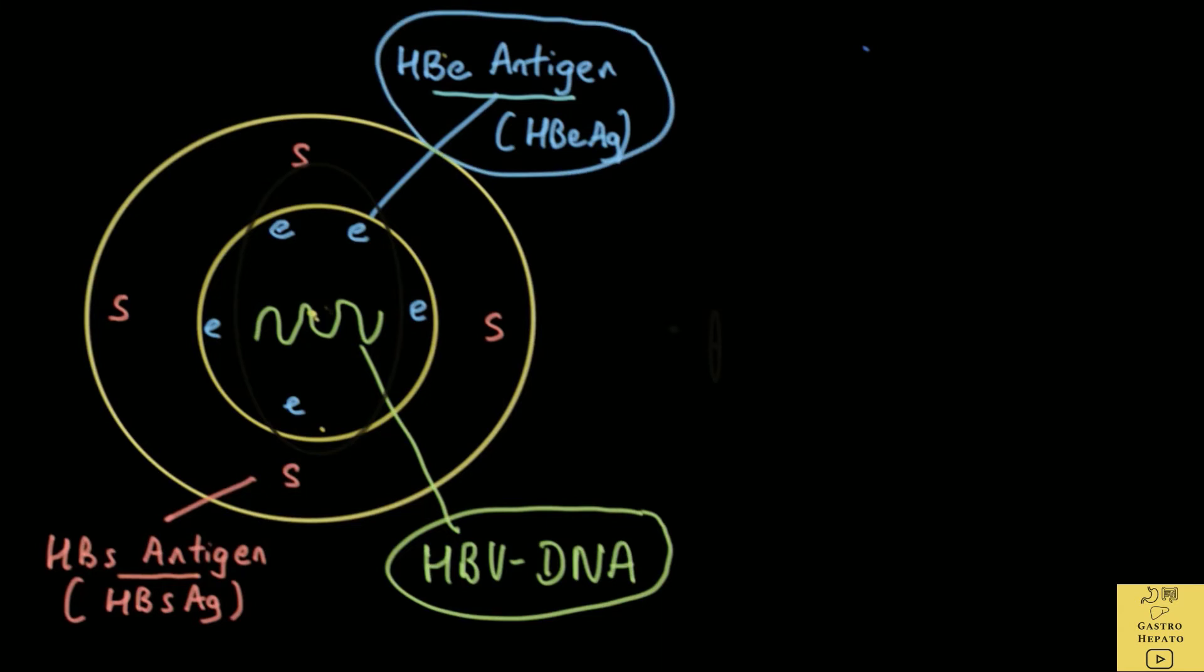After many years, the body eventually activates the immune system and starts to produce antibodies to destroy the virus. The first antibody that is produced is the antibody to the HBeAg, also called the anti-HBe. This destroys the E protein. When the E protein is destroyed, the virus cannot survive. The virus is incomplete and cannot multiply.